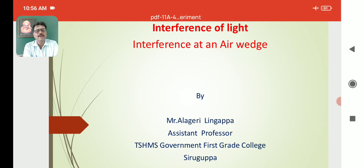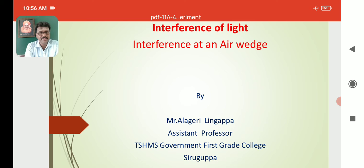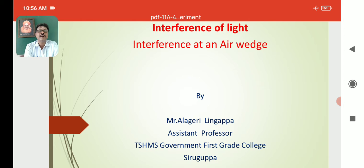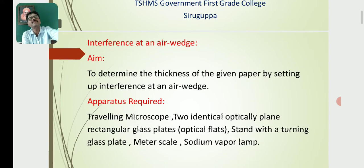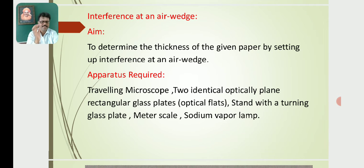I will discuss about the topic called Interference at an Air Wedge. This is not a theory topic — it covers the determination of thickness of an object, say paper or any other material, by the experiment called Interference at an Air Wedge.